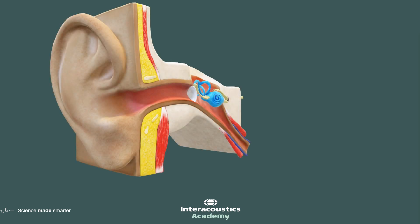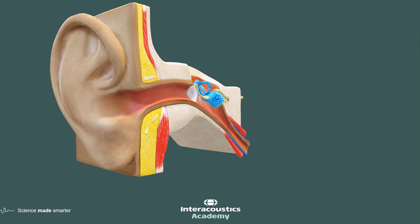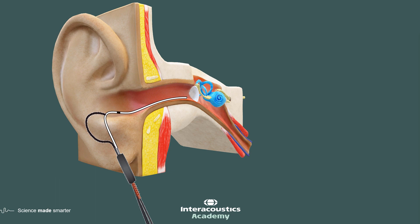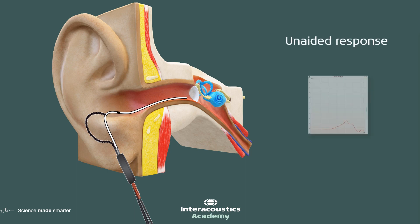So what is real ear measurement? Essentially what we're trying to find out is when we play a sound into the ear canal, what sound is being received at the eardrum? First of all, we do this in an unaided situation, where we place a probe microphone into the ear canal and then play a sound, and receive that sound at the eardrum. The probe microphone listens to that sound and graphically represents it as an unaided response.